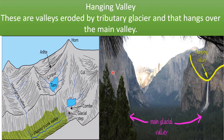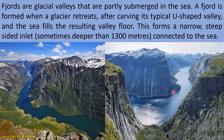Hanging valley: These are valleys eroded by a tributary glacier. When a tributary glacier forms a narrow valley adjacent to the main glacial valley, it is called a hanging valley. Fjords are glacial valleys that are partly submerged in the sea. A fjord is formed when a glacier retreats after carving its typical U-shaped valley and the sea fills the resulting valley floor, forming a narrow, deep-sided inlet — sometimes deeper than 1,300 meters — connected to the sea. The Scandinavian countries like Norway, Sweden, and Finland have coastlines made up of these fjords, carved at the end of the ice age when glaciers started retreating.